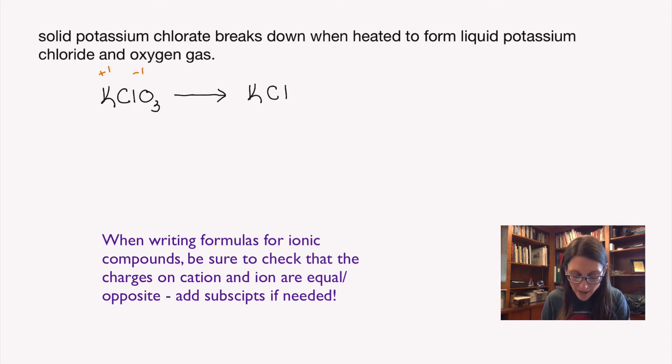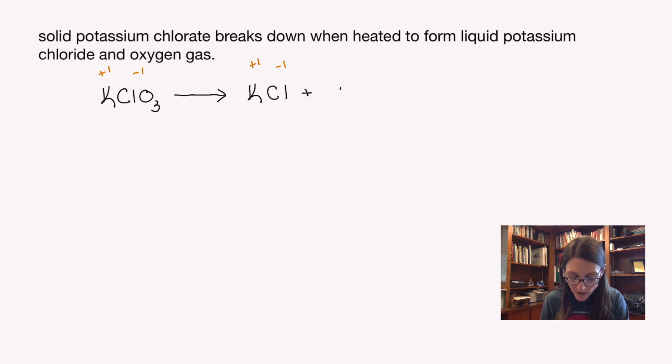Potassium and chloride are K and Cl. Potassium is plus one, chlorine is minus one. I only need one of each. I'm also forming oxygen gas, which is O2. I'm going to add my state symbols back in and remove the charges so we can focus on balancing.